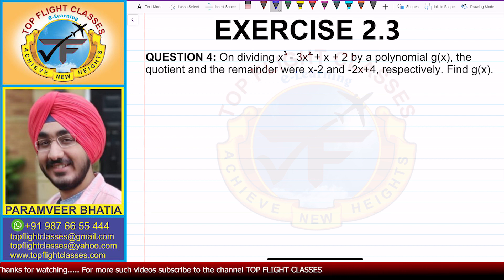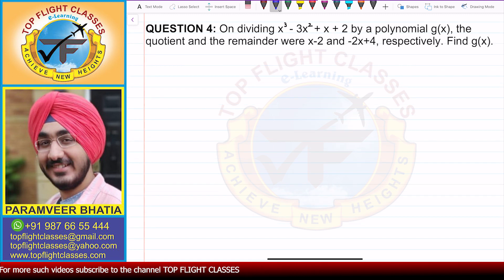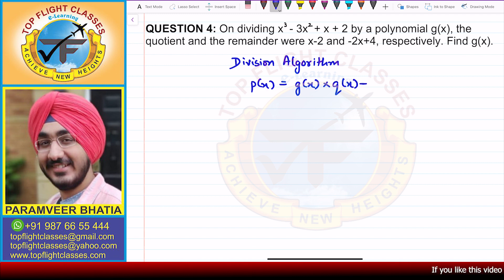To solve this question, first we will write the division algorithm. So that is p(x) = g(x) × q(x) + r(x).